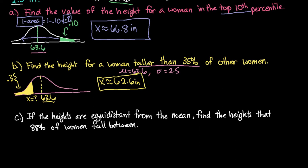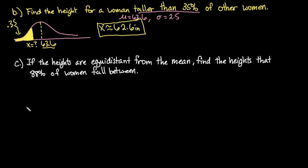So looking at the last one that we have here, it says if the heights are equidistant from the mean. So what that means is that I am going to center this at the mean 63.6. And this time, I am going to be looking for two values. So I am going to be looking for an x1 value and an x2 value where 88% or .88 of the women fall between.